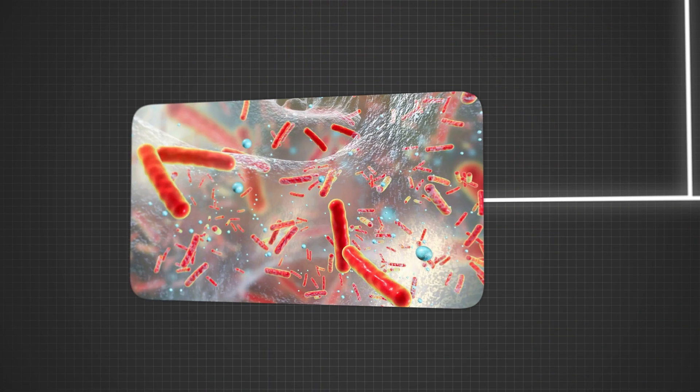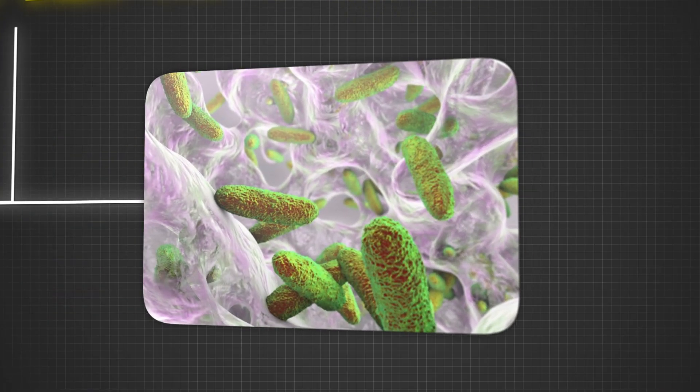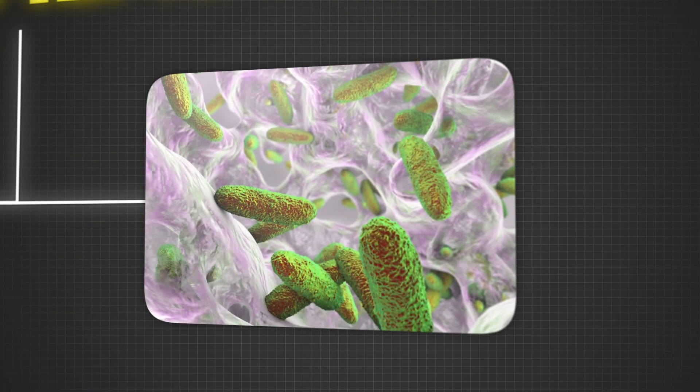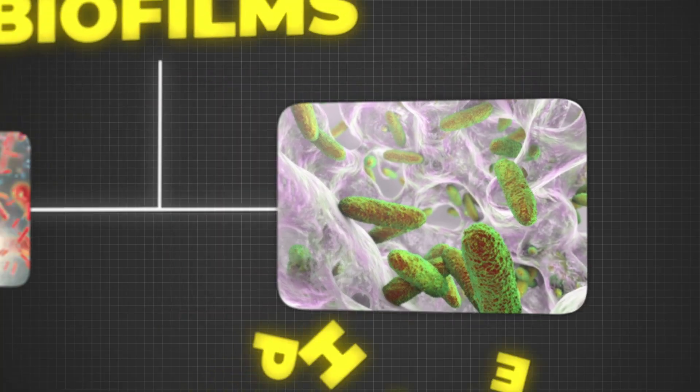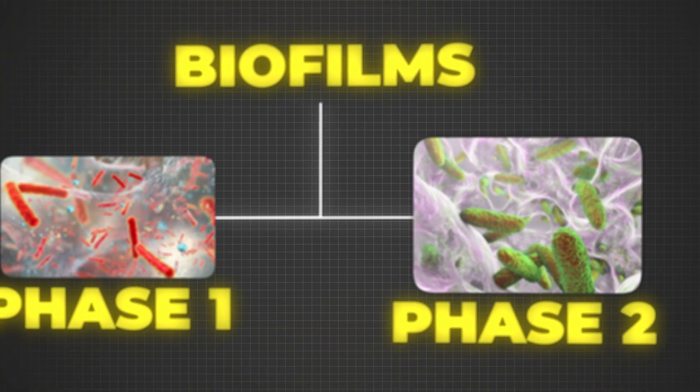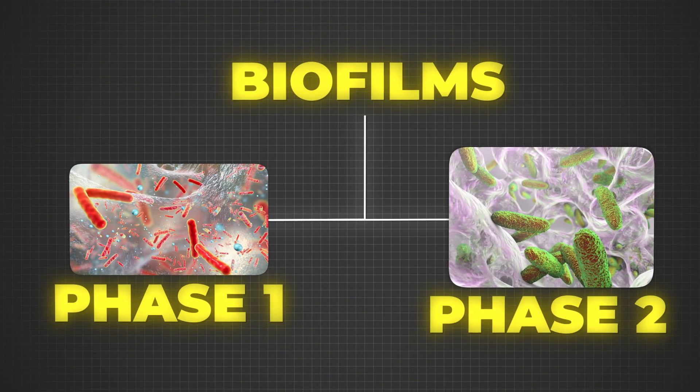There's one end of the spectrum which are normal biofilms. Every mammal has them. They're in the ocean, they're all over any wet place. So we have normal biofilms, just like we have normal bacteria that are good for us in our GI tract. Then we have a spectrum of pathological or damaging biofilms, and we have taken to dividing them into phase one and phase two biofilms.